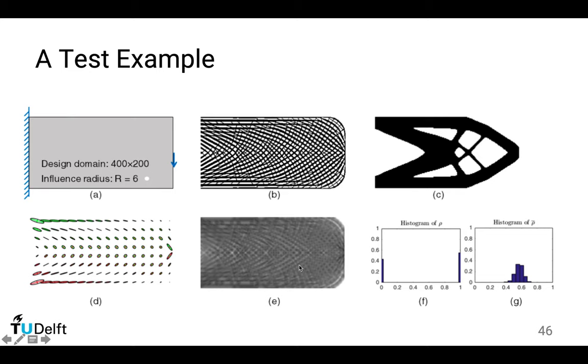And this image here visualizes the local volume constraint. So the local volume ratio, we want it to be smaller than 0.6. So everywhere is not black but gray. And these two plots show the histogram. In the design, we have black and white design. So it's either material or not. So we have fully solid elements and fully empty elements. And we don't have elements which are not converted to 0 or 1.